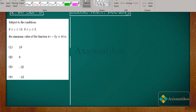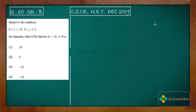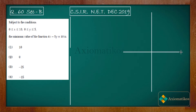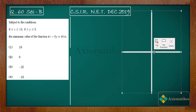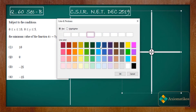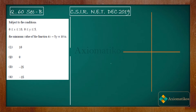Since the problem is in two variables, we can solve it using the graphical method. We will first draw the graph for the given constraints, and then solve the problem.